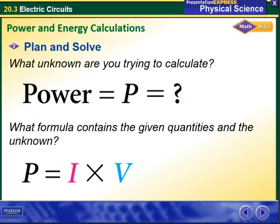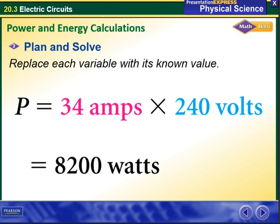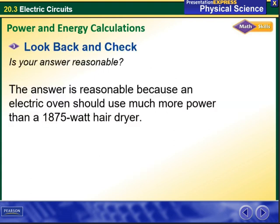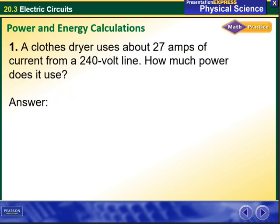What unknown I want to find equals power. Power equals the voltage times the current. Now I put them together and multiply them together easily using your calculators. And then we are going to check if our answer is reasonable or not. So the answer is reasonable because an electric oven should use much more power than a 1875 watt hair dryer.